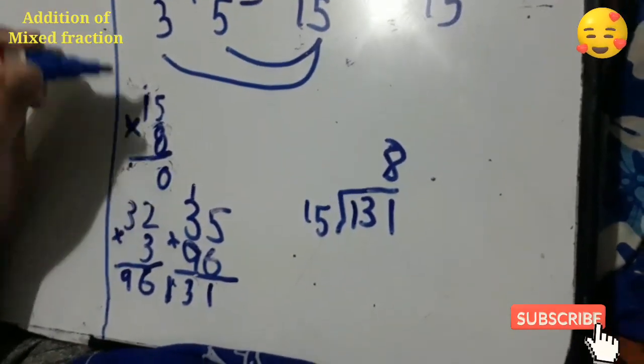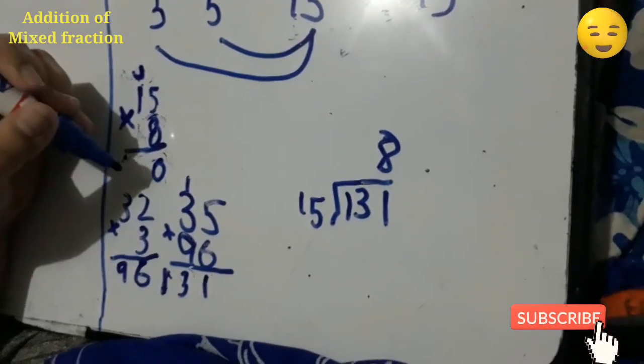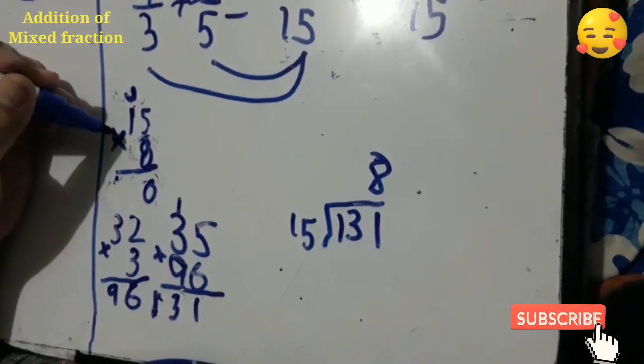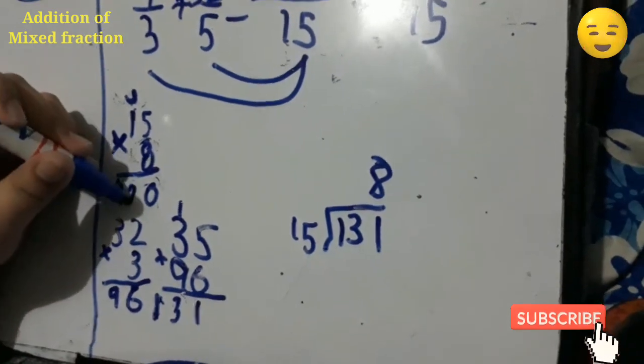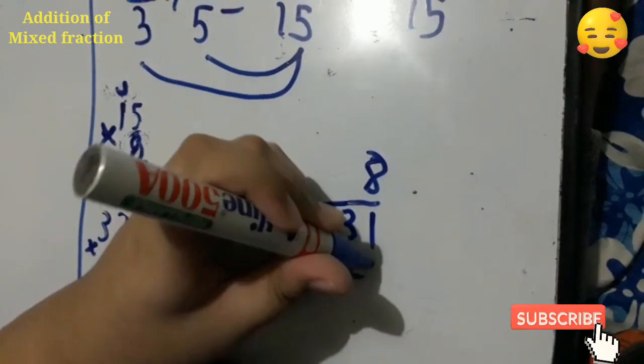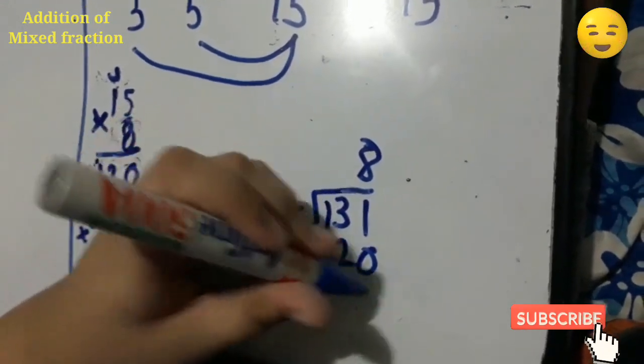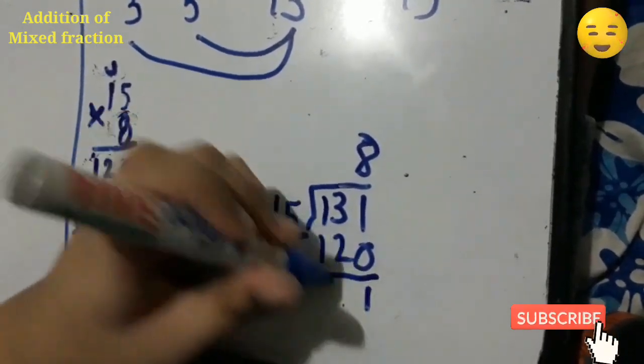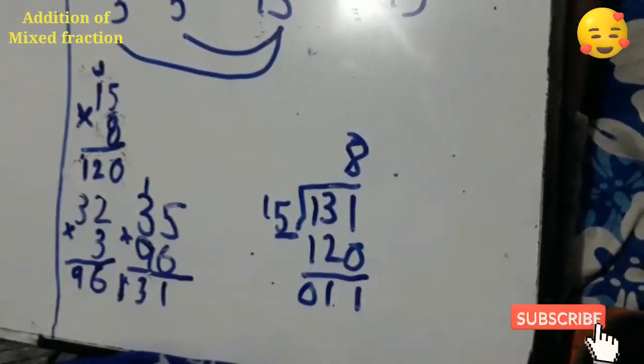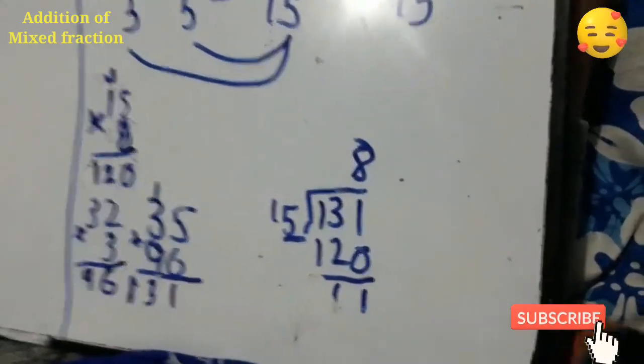Then you need to do 131 minus 120. So 1 minus 0 is 1, 3 minus 2 is 1. So only 11. Now you can put it. Only 11.